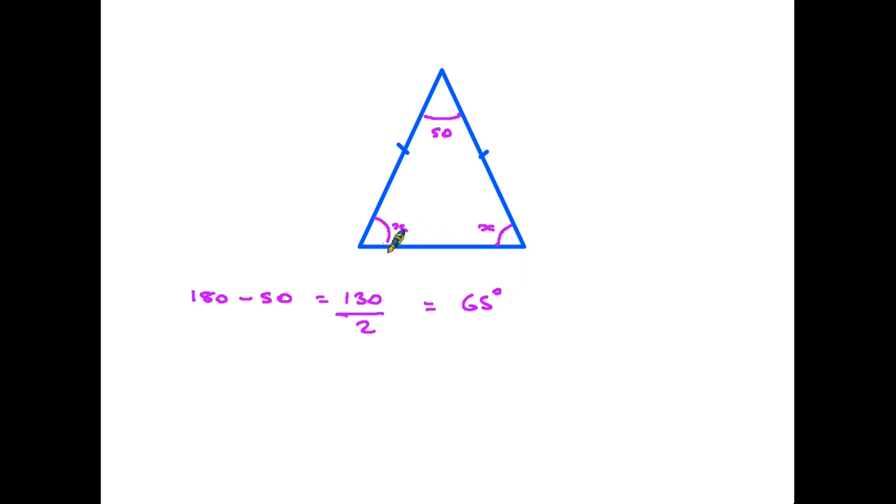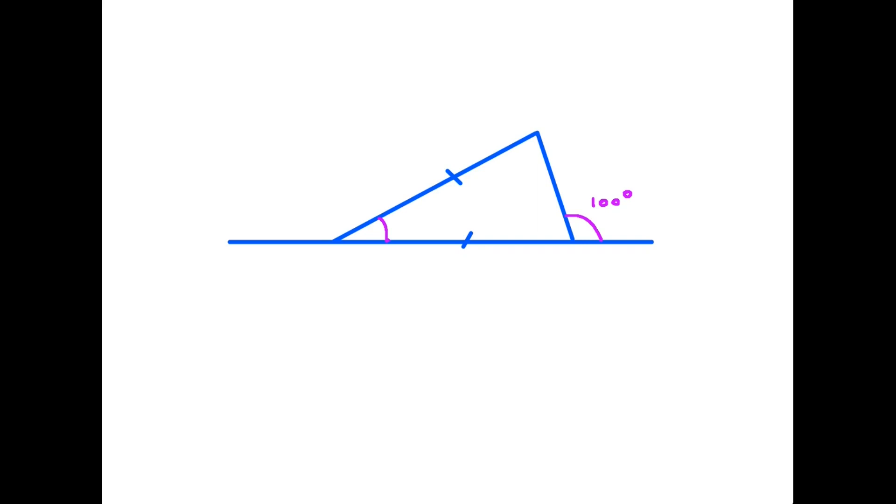I am going to continue with more angle laws in a second video but to complete this one I just want to give you an example of the type of question you might be asked to solve using the rules that we've looked at so far. Here we have a straight line and on it we have a triangle. We're given an angle which is on the outside of the triangle and the question here is to find the angle X. What the examiners are doing here is combining different rules and expecting you to understand which rules to apply to find the answer. We're going to answer this by quoting rules.